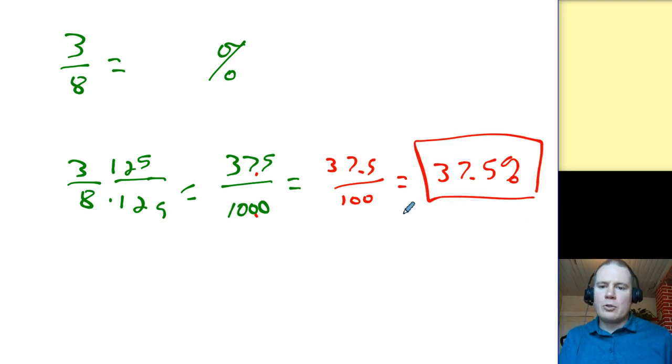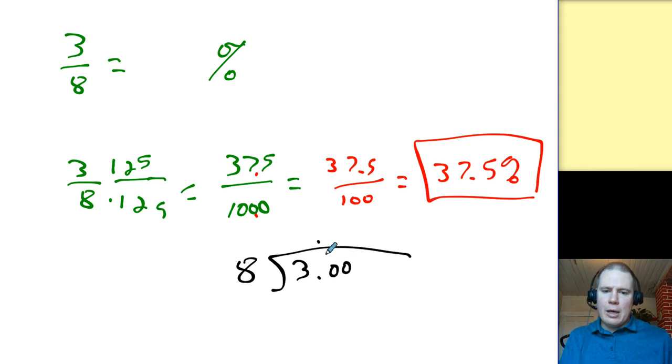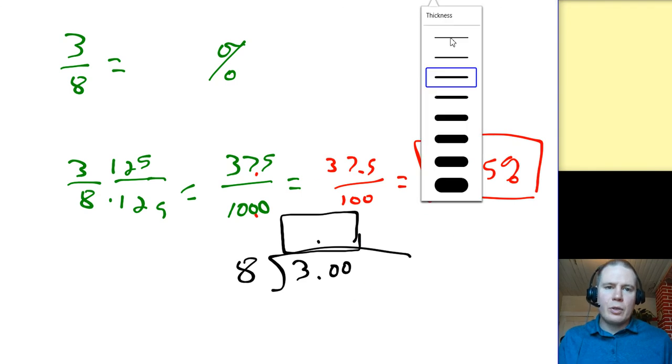That works, but only if we have this memorized, which I'm not expecting you to do. So how else can we turn 3 eighths into a percent? We do the long division. 3 divided by 8. Once we get our decimal, I'm going to look at this hundredths place. That's my percent, if it's a whole number, and then if there's a remainder, we'll deal with that.